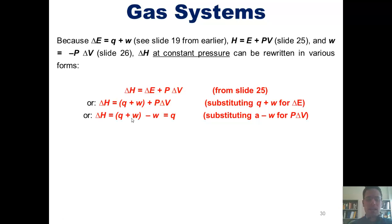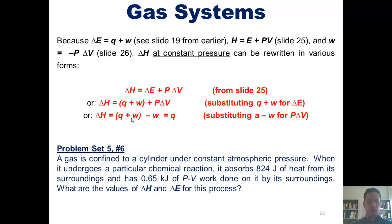Now I realize this is many equations I've thrown at you to learn. Please rest assured that on the exam and problem sets, I will give you all the equations that you need and will not require you to memorize them. This lets us finish with a final example. A gas is confined to a cylinder under constant atmospheric pressure. When it undergoes a particular chemical reaction, it absorbs 824 joules of heat from its surroundings and has .65 kilojoules of pressure-volume work done on it by its surroundings. What are the values of delta H and delta E for this process?